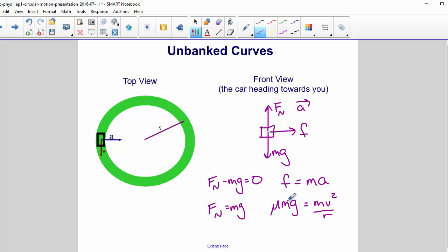Now we can divide both sides by m, and we get mu g equals v squared over r. Now you can solve for any of these variables, mu, v, or r.